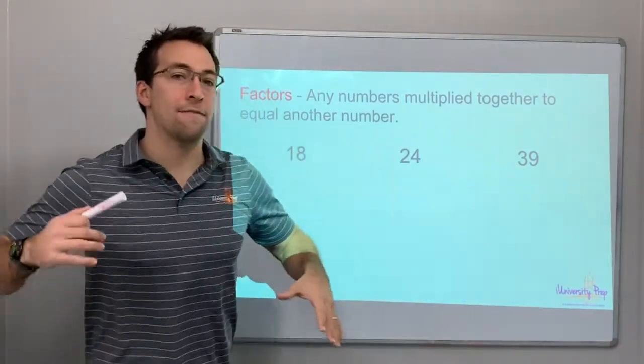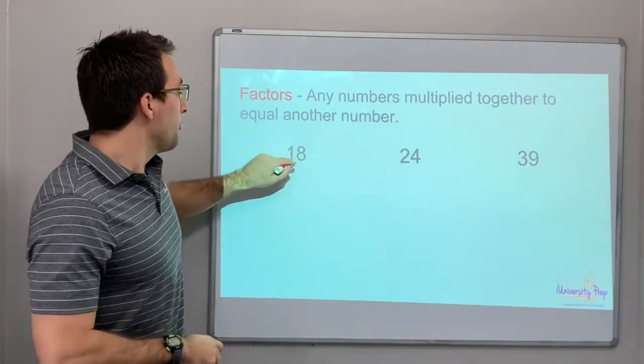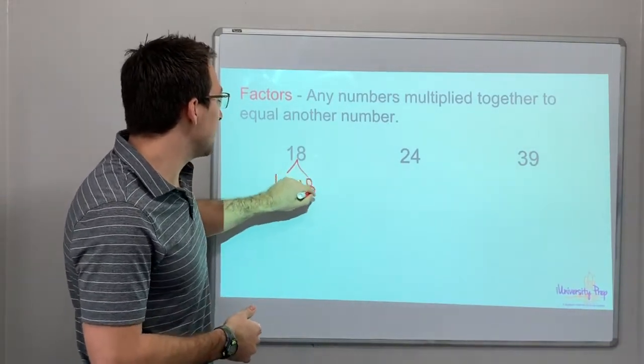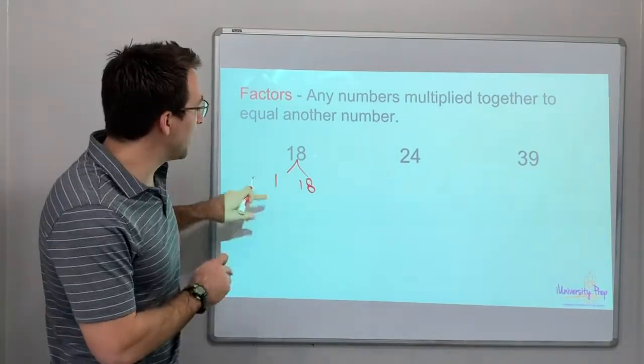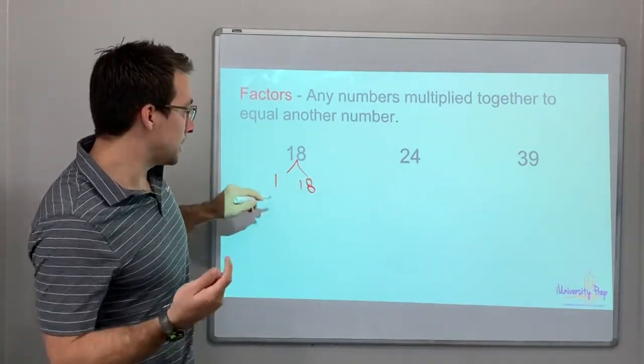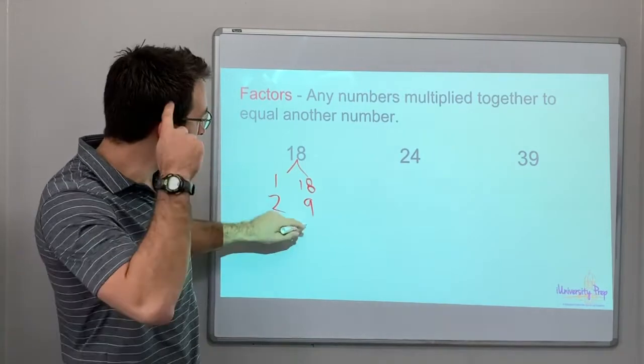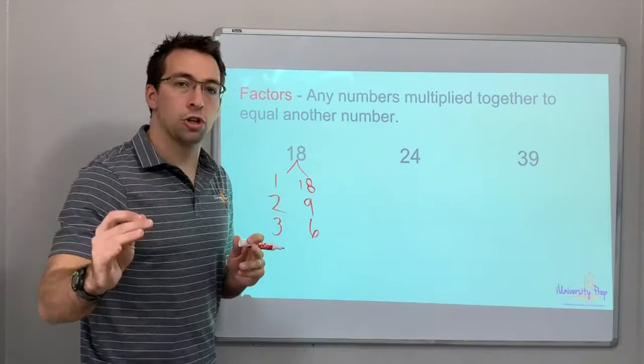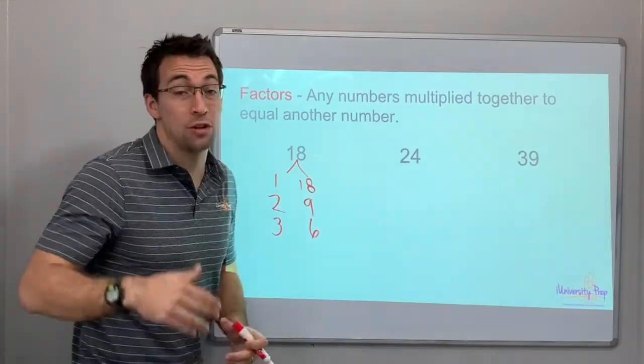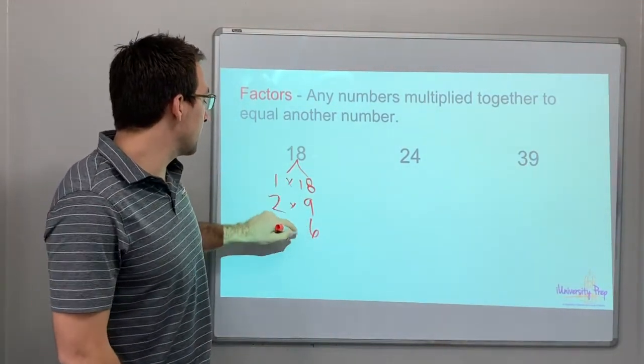So let's look at 18, 24, 39 and find the factors that can be multiplied together to create 18, 24, 39. Whenever you're creating a factor tree, always draw an arrow, right? So check this out. 1 times 18 equals 18. It's very simple to find your factors if you just start with 1 and then 2, 3, 4, 5. Not every number will continue. 1 times 18 is 18. 2 times 9 is 18. 3 times 6 is 18.